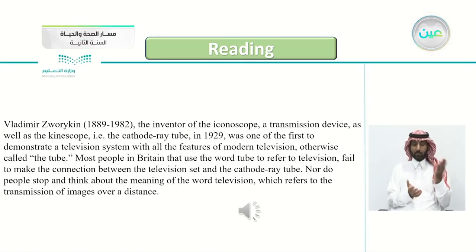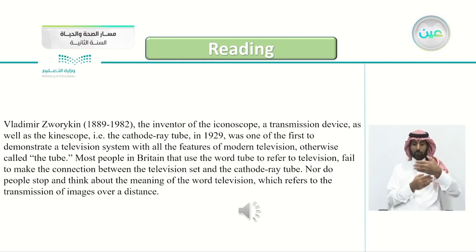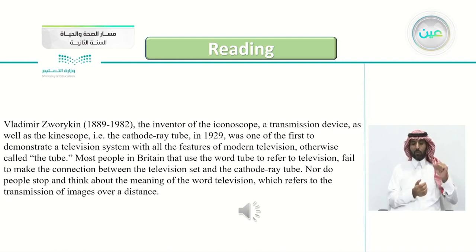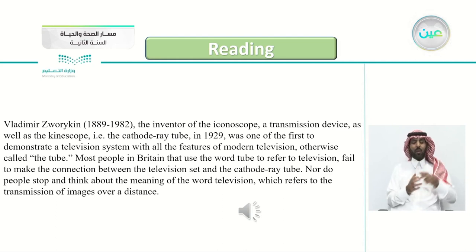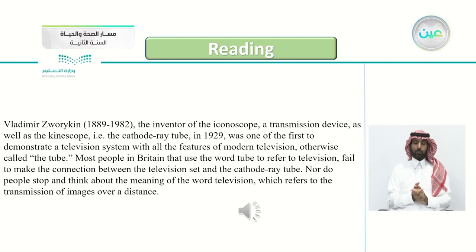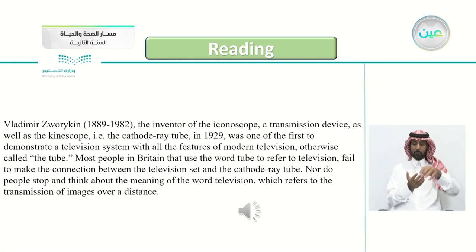In 1927, Vladimir Zworykin, 1889 to 1982 — inventor of the iconoscope, a transmission device, as well as the kinescope, a cathode ray tube, in 1929 — was one of the first to demonstrate a television system with all the features of modern television, otherwise called 'the tube.' Most people in Britain who use the word 'tube' to refer to television fail to make the connection between the television set and the cathode ray tube, nor do they think about the meaning of 'television,' which refers to the transmission of images over a distance.